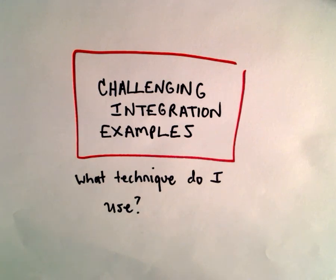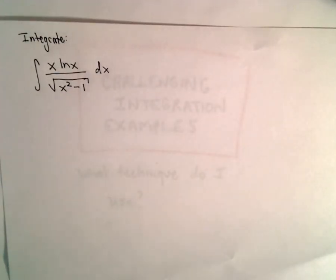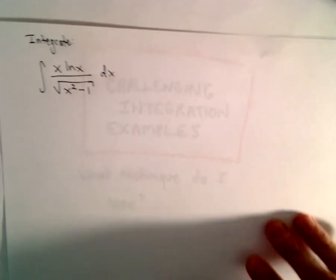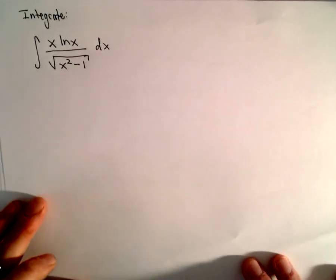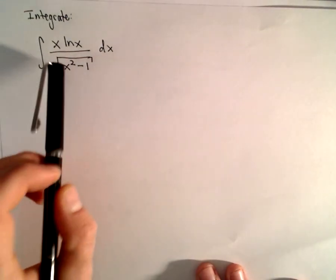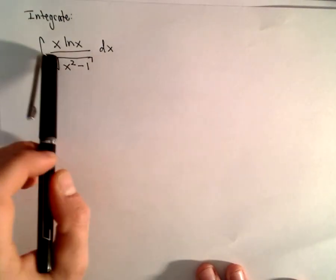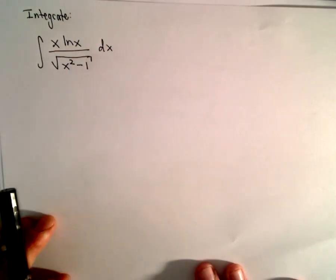In this video, I'm going to do another example of what might be considered a slightly harder integration problem. I'm going to run through my thought process on how to get started on a problem like this. We're going to integrate x times ln(x) divided by the square root of x² minus 1, dx.